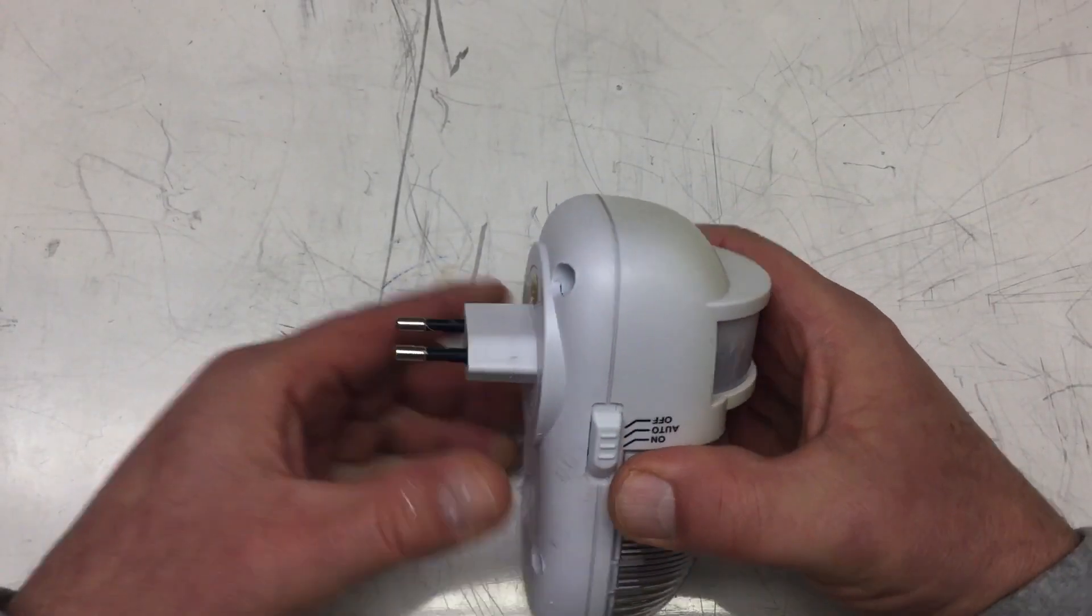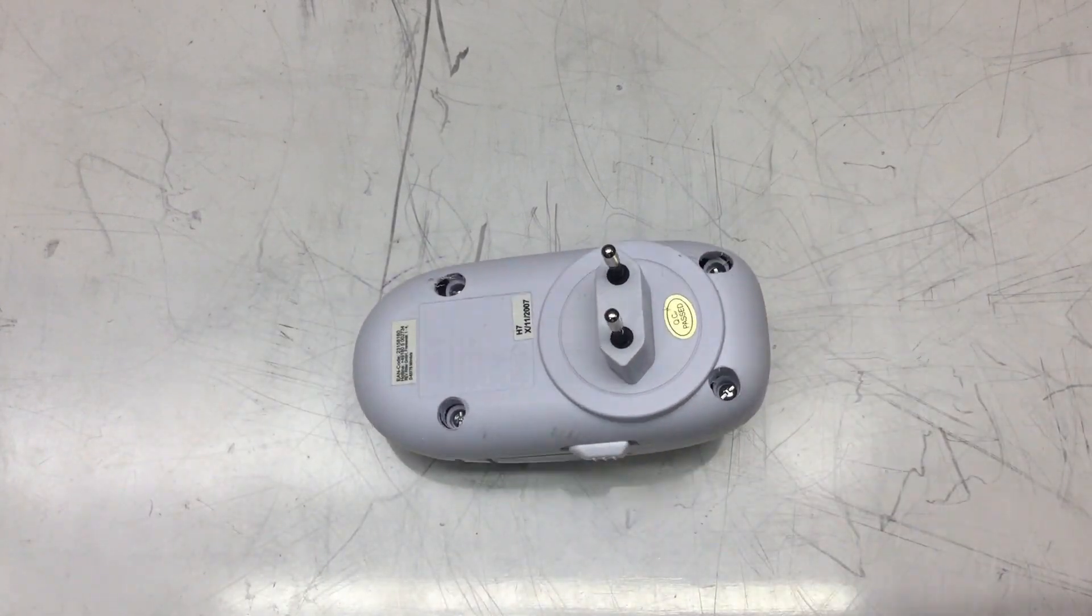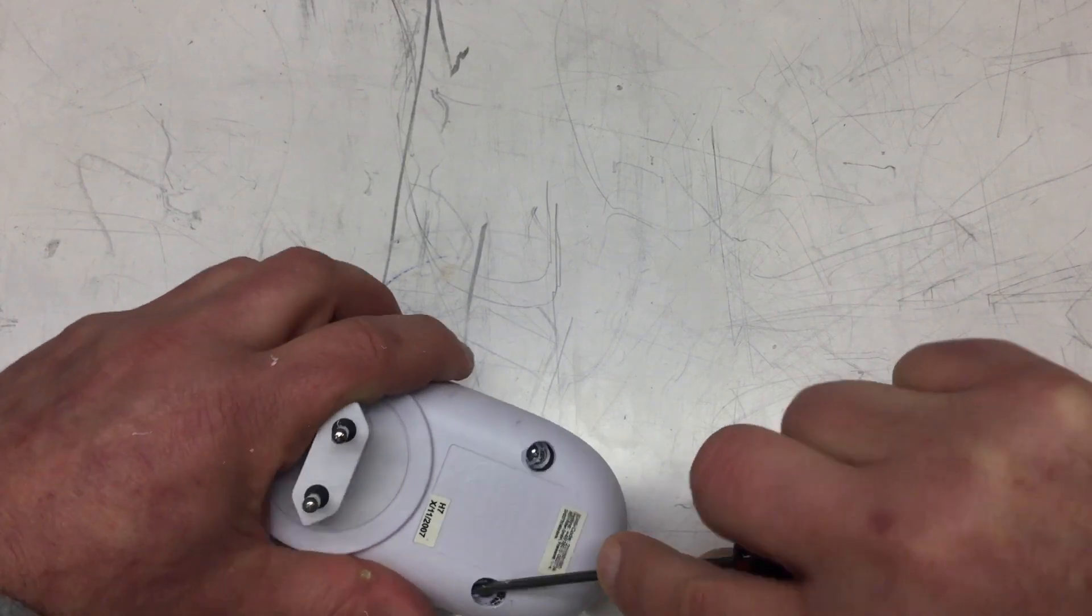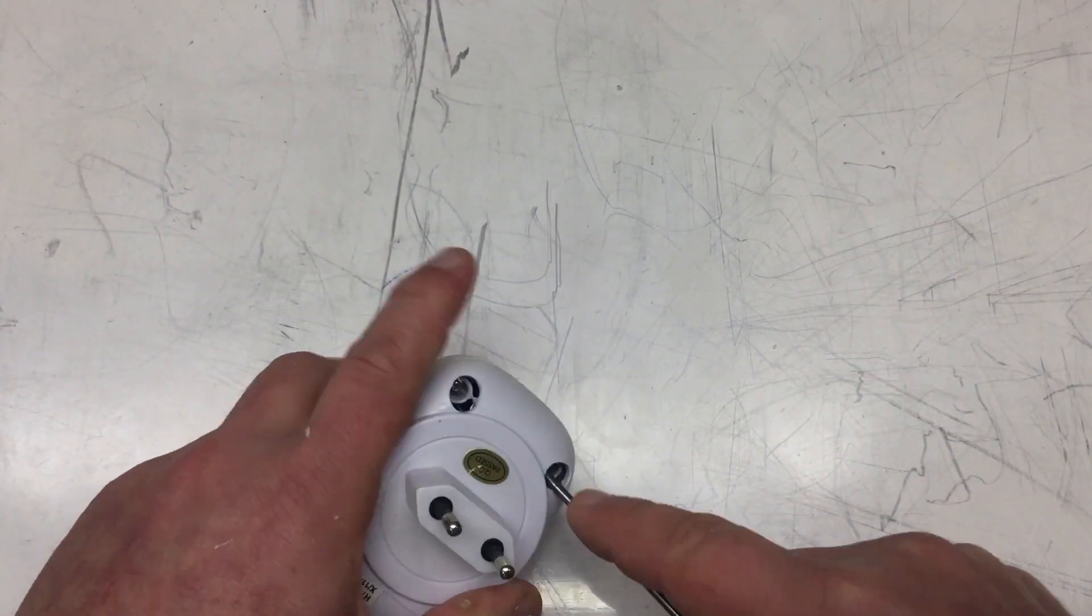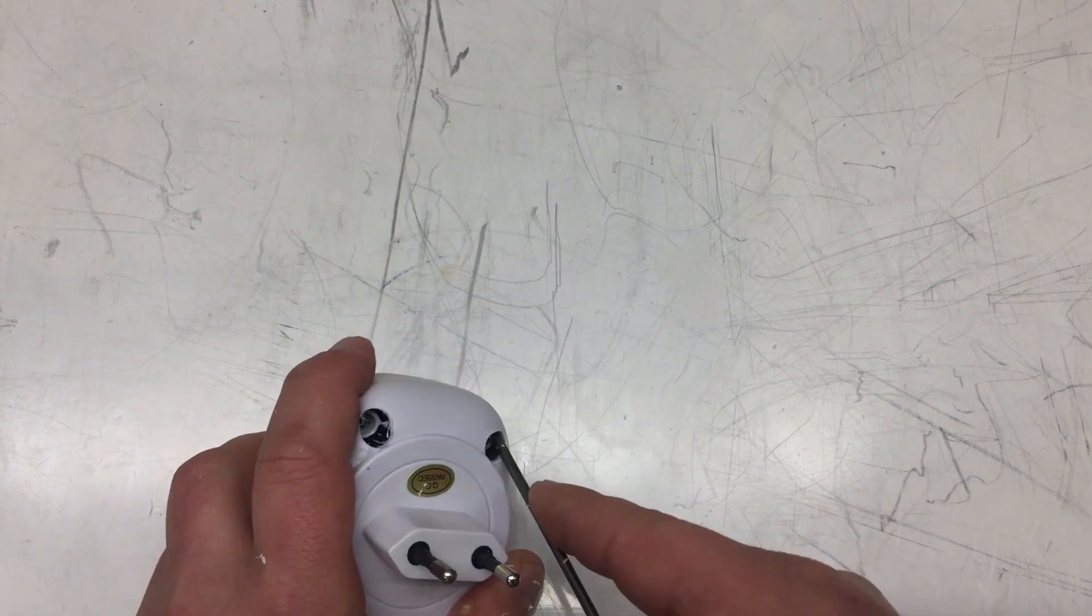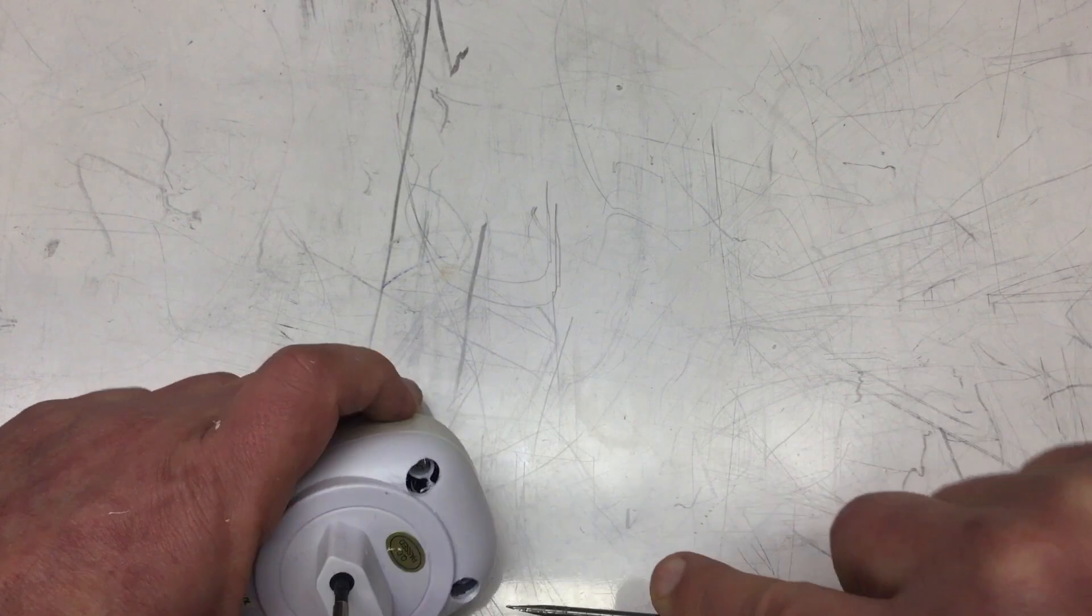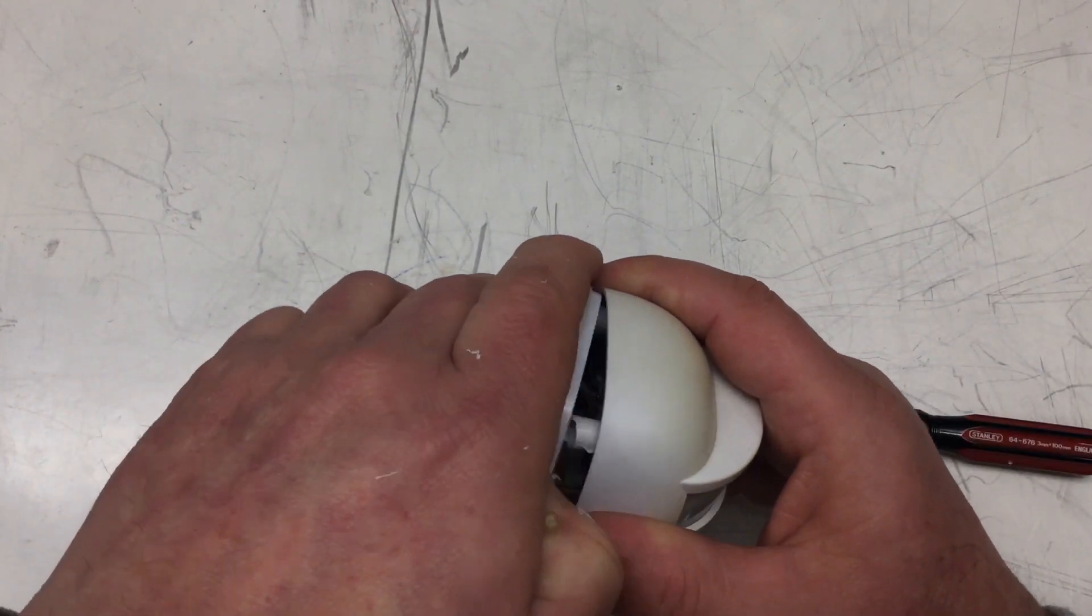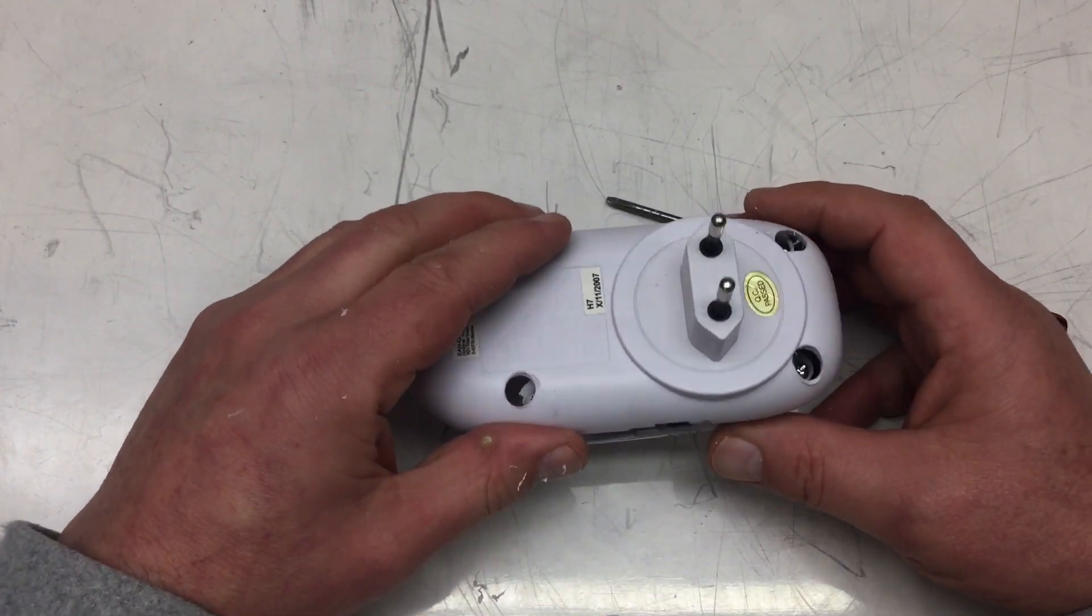So let's see if it comes apart now. There's really nothing holding it together anymore. Maybe on that side. Yeah, I should have taken more off here. But it's really a soft plastic. Here we go. Sorry, I was a little bit off screen.